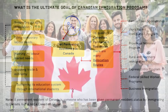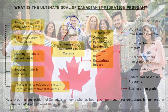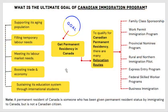Number four was to boost trade and economy. Number five was to sustain its educational system through international students, which shows you why a lot of international students are welcome in Canada. Now as a Nigerian watching this, I know for sure that what you want is not just to fulfill these needs but to get a permanent residency in Canada.